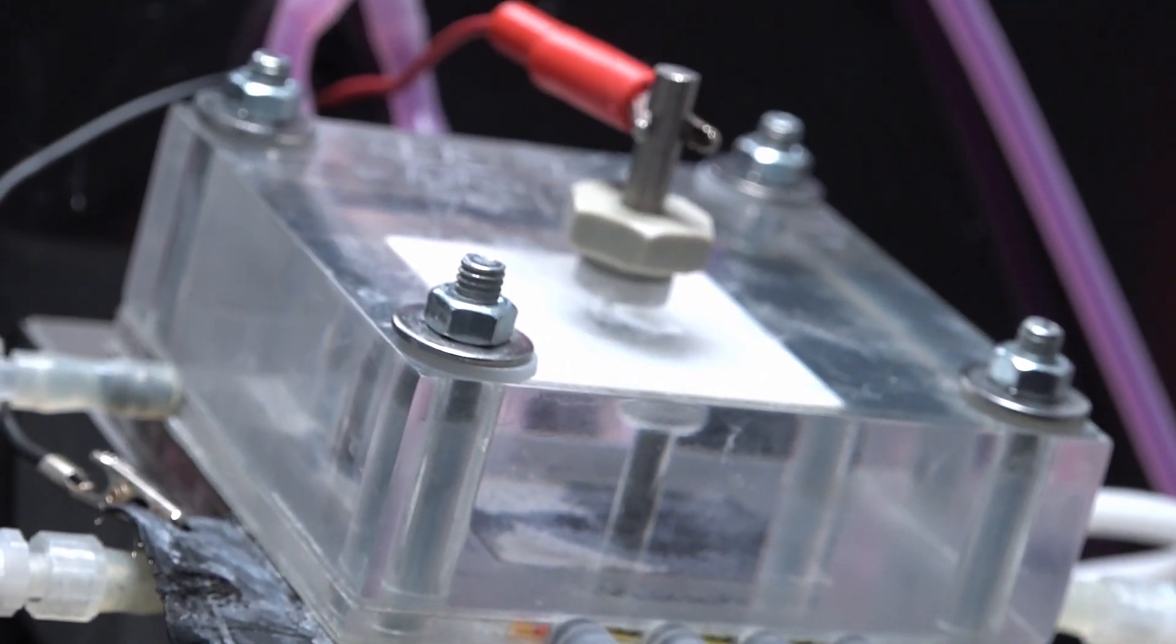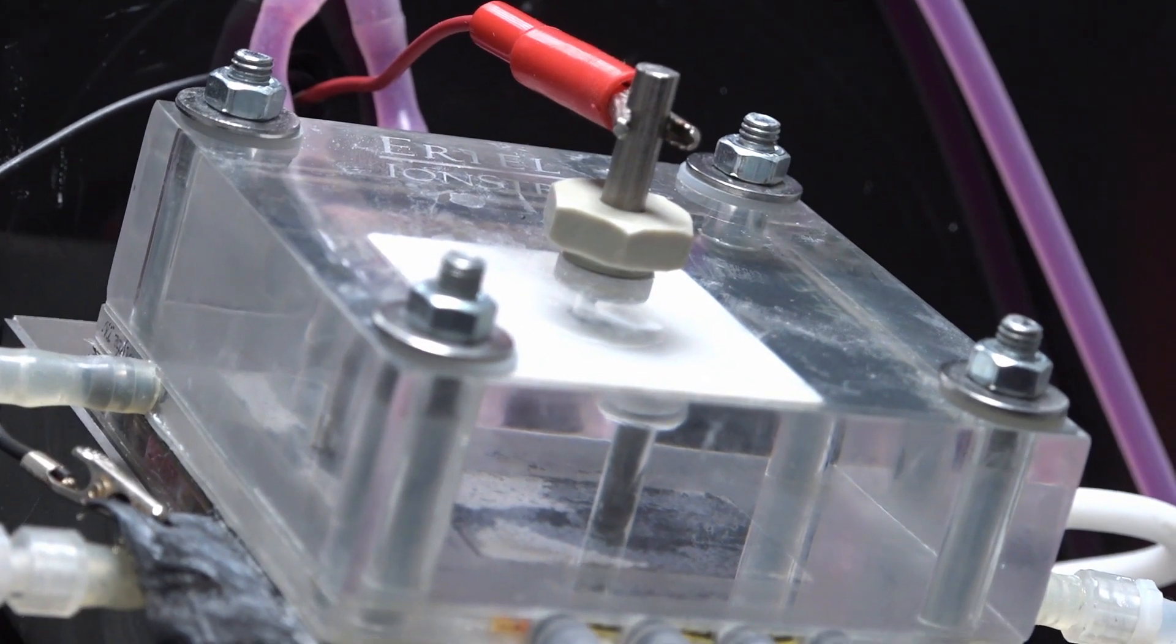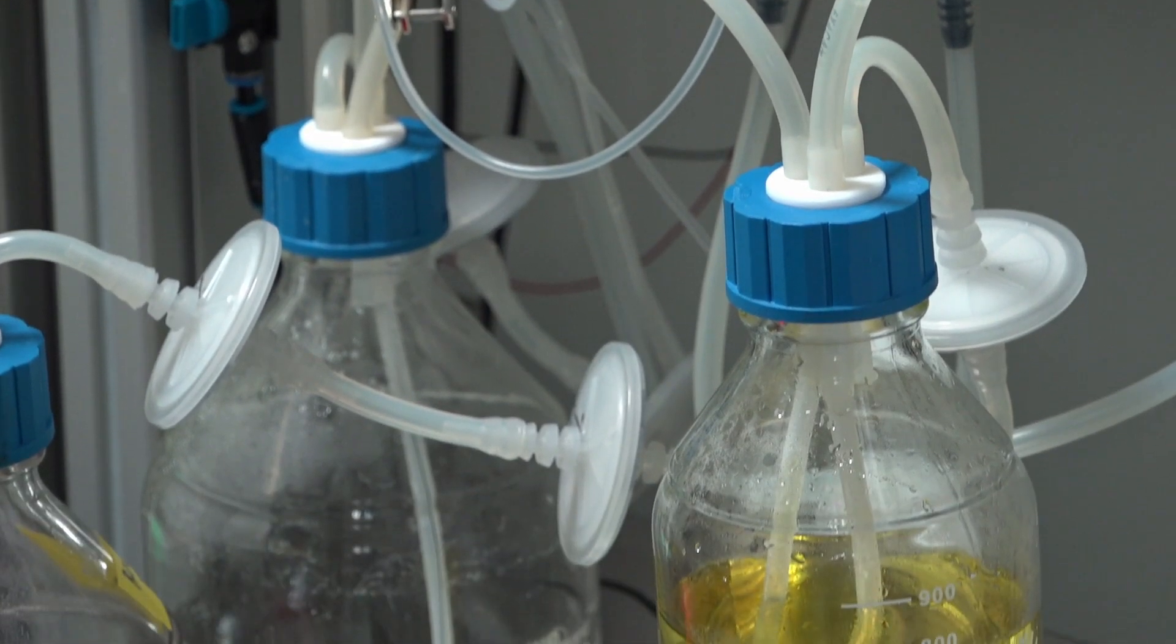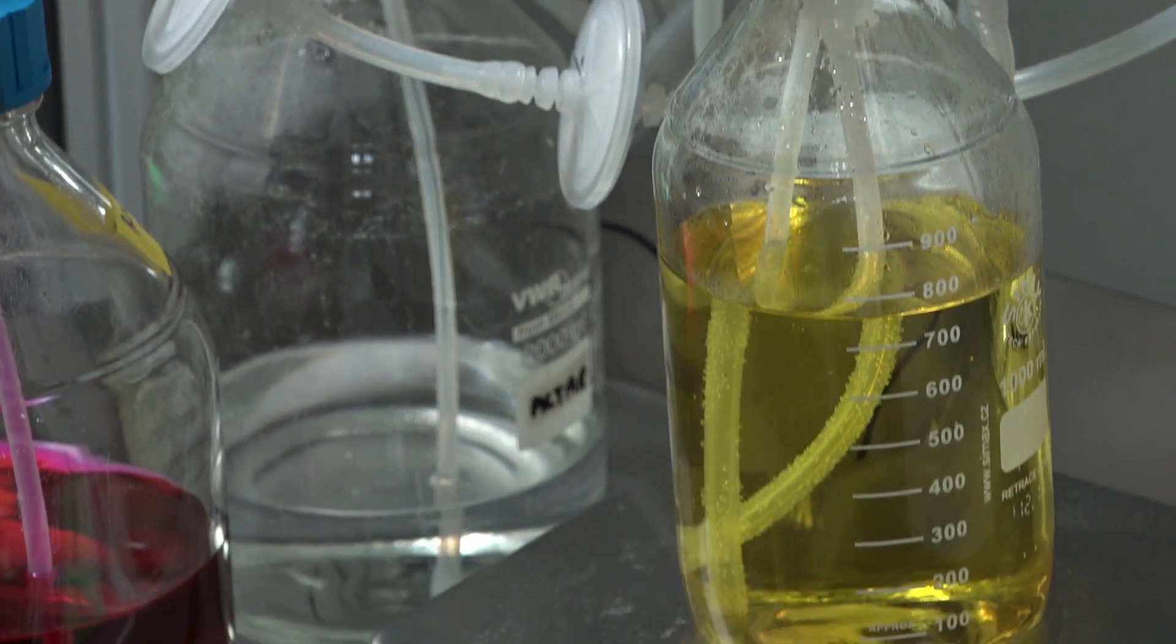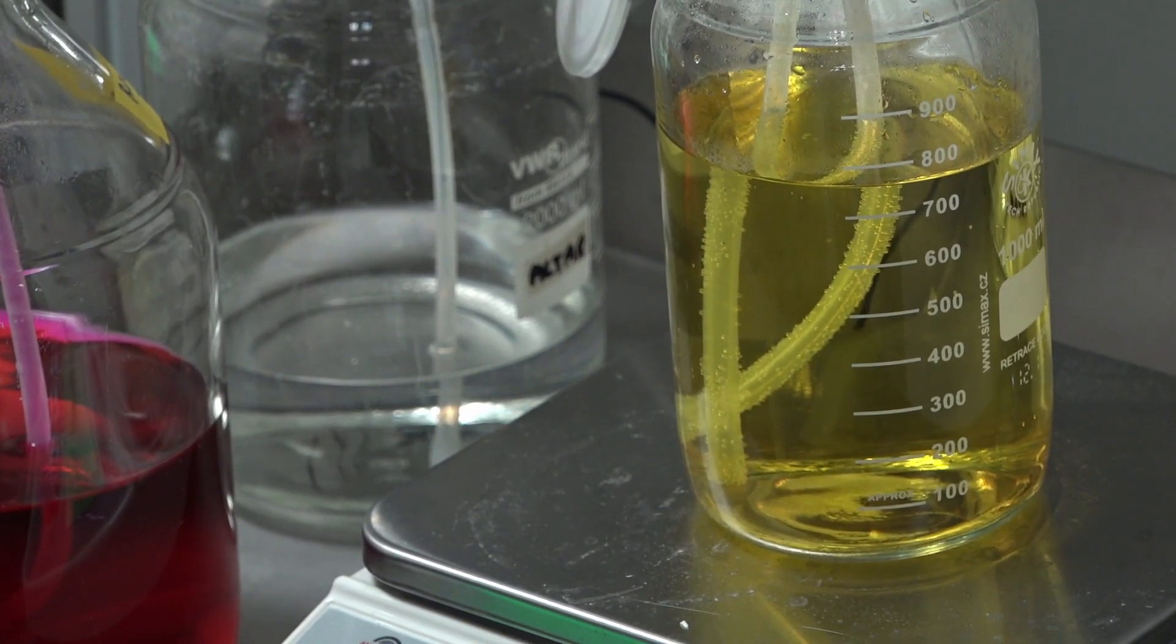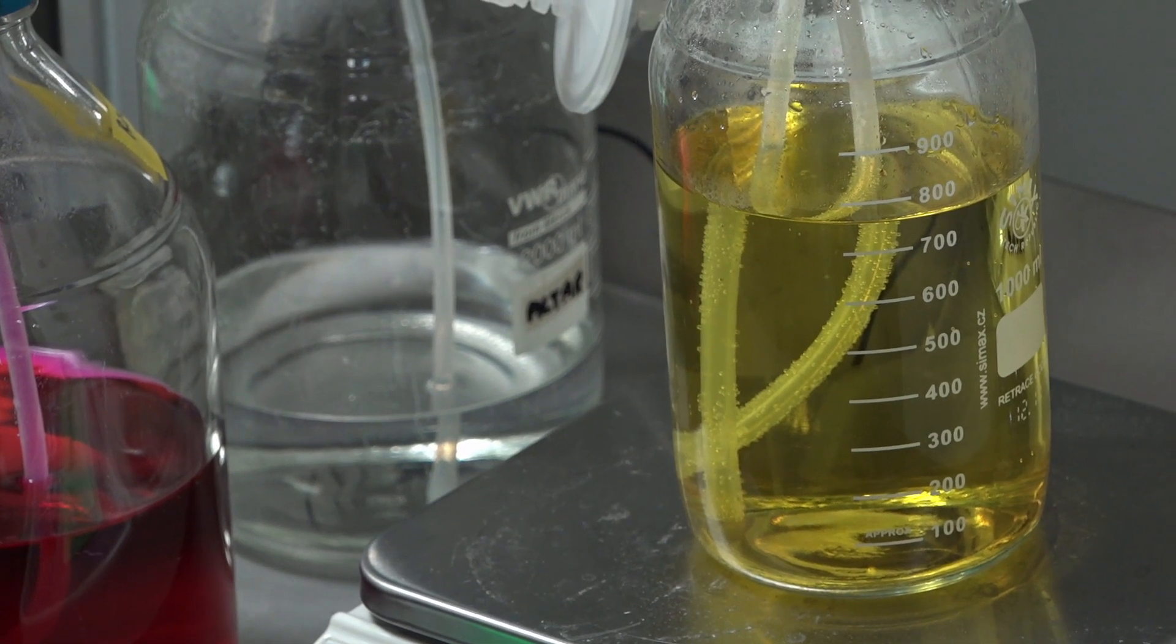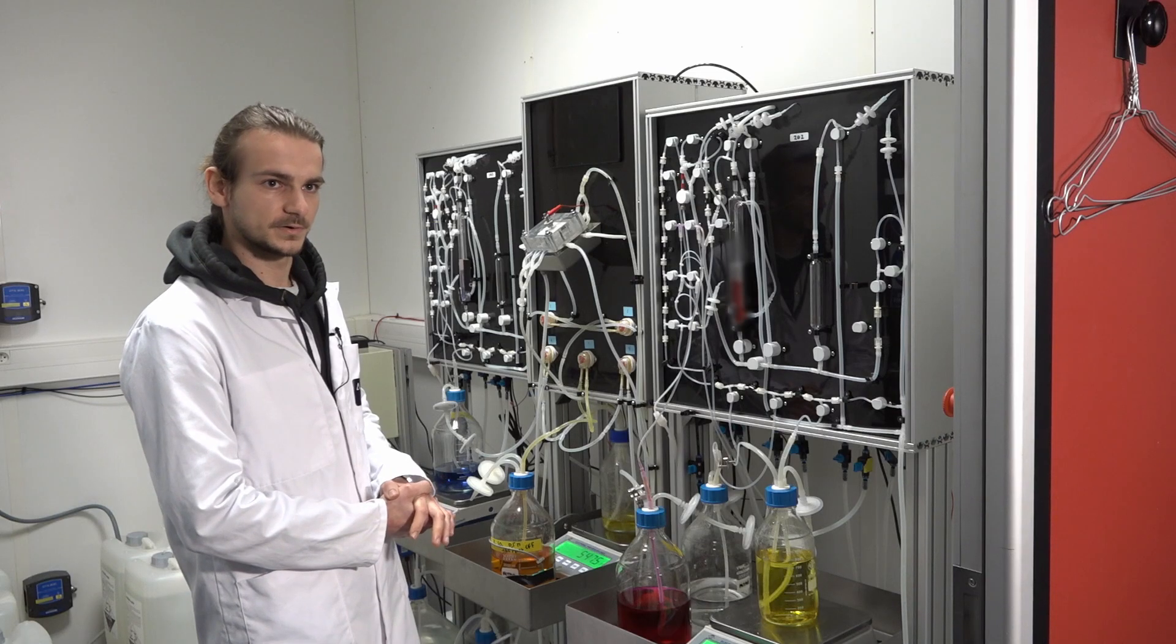Thanks to that, we can produce the formic acid using electricity and CO2. The formic acid is transferred into the bioreactor in which it will be able to be eaten by the bacteria in order to produce biofuel.